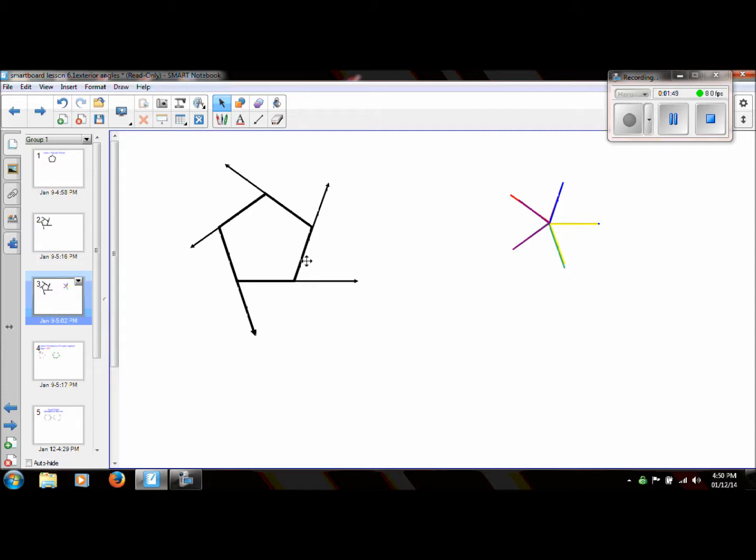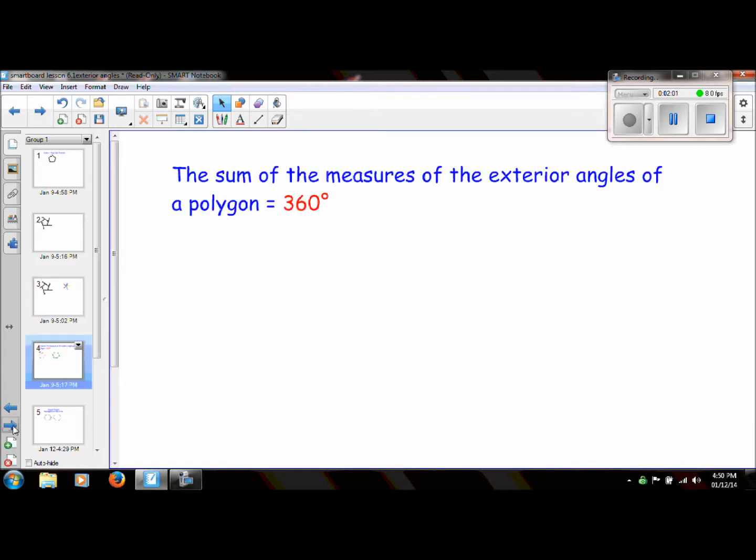And you could actually just take a protractor and measure each one of these, and they would add up to 360 degrees. So the sum of the measures of the exterior angles of a polygon is 360 degrees.